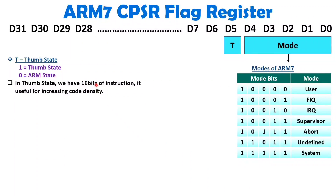When working in Thumb state, the instruction size is 16 bits, which increases code density. For lower-end applications, users can enable Thumb state for more efficient memory use in programming. For high-end applications, ARM state executes 32-bit instructions, enabling higher performance. ARM7 can be used in Thumb state by keeping the T bit equal to 1.